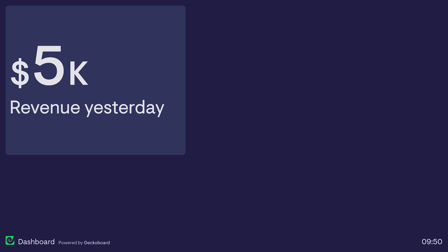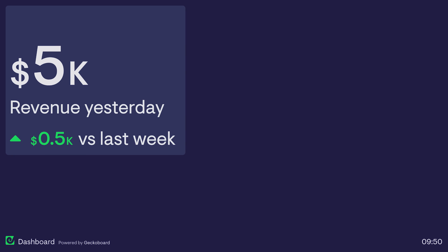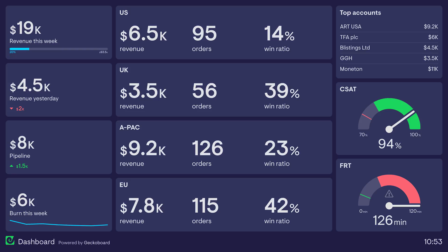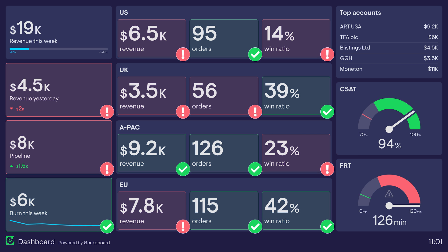Numbers on their own don't actually tell us that much. Let's say yesterday's revenue is $5,000 — is that good? Bad? Normal? Unusual? How does it compare to last week? Has it gone up or down? How does it compare to our target? Giving context to a number in the form of a status indicator or a comparison can quickly tell us the significance of that number. Just beware: too many status indicators can create noise. If your entire dashboard is red and green, then the significance of those colours is greatly reduced.